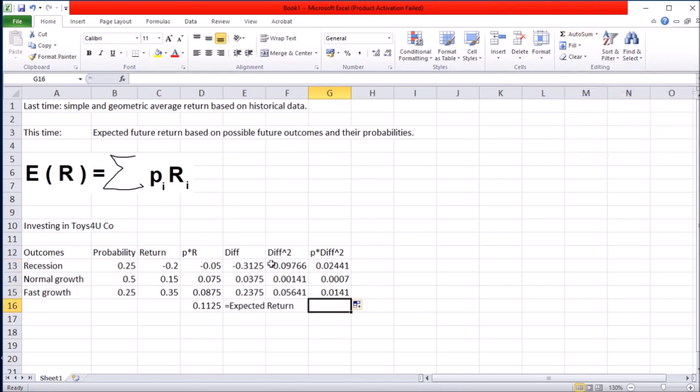Once you add up all of these numbers of the probabilities times the squared differences, what you'd get is the variance.